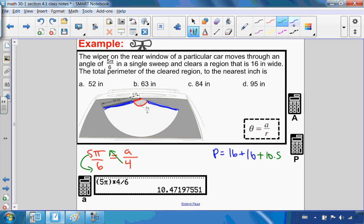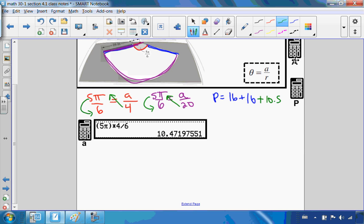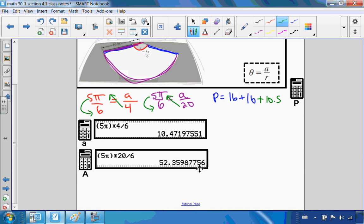Then I want to do my big arc length. For this arc length, the angle is still the same. I still have 5π over 6 equals arc length over radius. But this time, my radius is the 4 and the 16, which is 20. Same idea, I'm going to cross-multiply and divide. So 20 times 5π divided by 6, and that will give me my big arc length, which is 52.4.